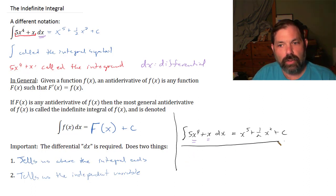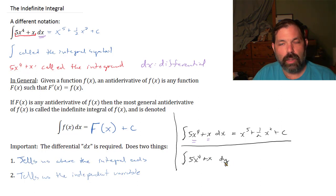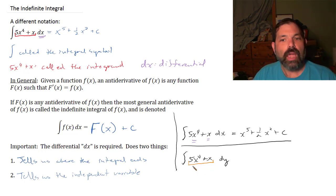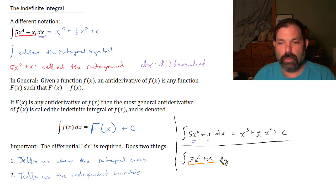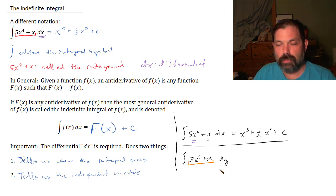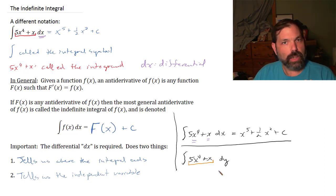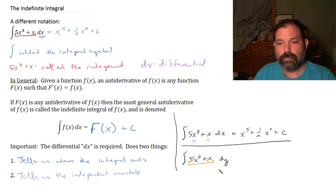If, however, I was integrating with respect to some other variable — say integrating 5x to the fourth plus x dy — now y is the independent variable. Since there's no y variable in the integrand, we can think of 5x to the fourth plus x as being constant in terms of y, so the antiderivative would be something different. This becomes important in a later course, so we must be careful that the variable in our integrand and our differential match.